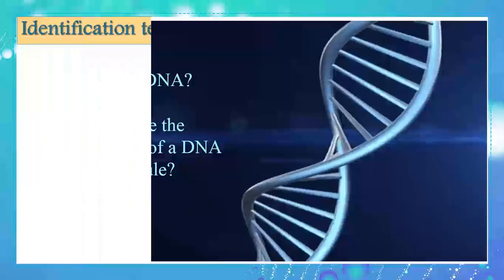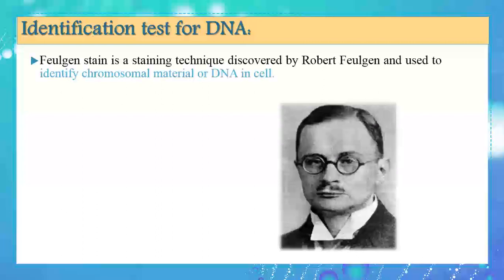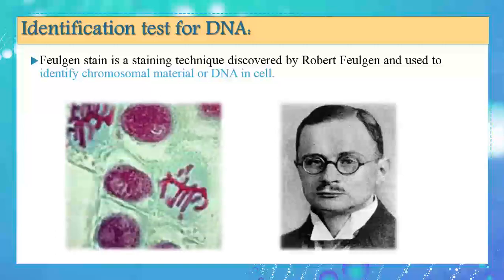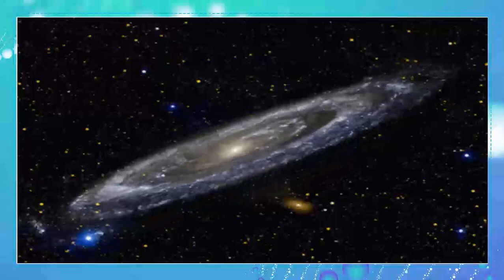Now, what do you think DNA is, and what are the components of the DNA molecule? Let's start the lesson to answer these questions. In our first step, we must locate DNA in the cell. Here comes Robert Feulgen, who made a staining technique named Feulgen stain that colored DNA in red, as you can see here. In this way, Feulgen found that DNA is located in the nucleus of a cell.